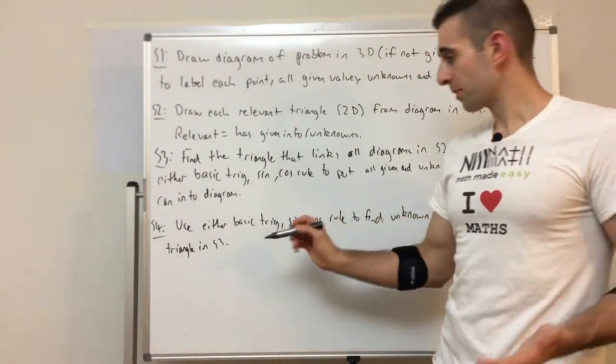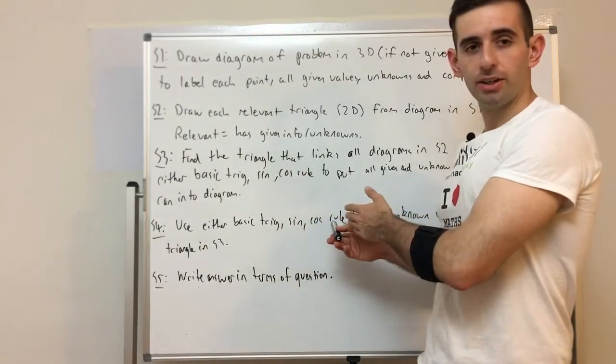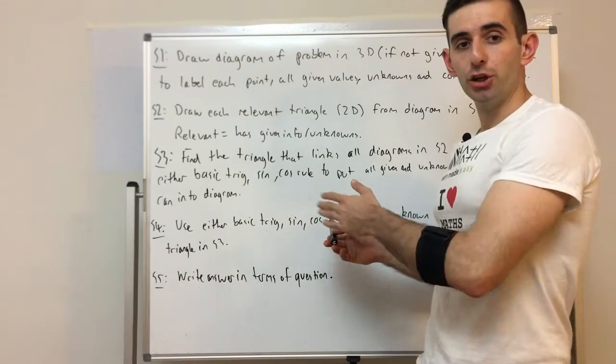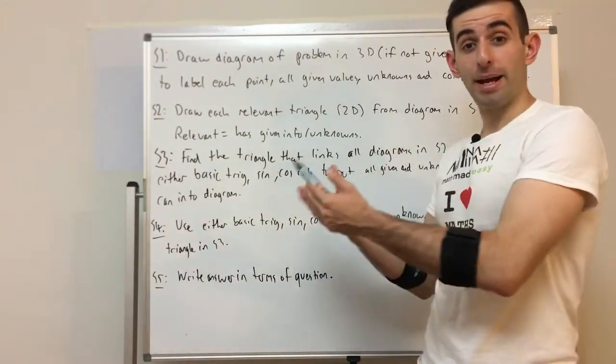So then the last step we've got to do is write the answer in terms of the question. You're going to get a value for your unknowns, but you're going to have to put that in terms of what the question is asking for. Is it the height? Is it a bearing?